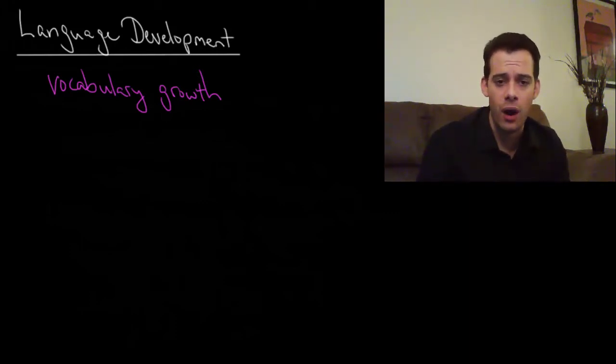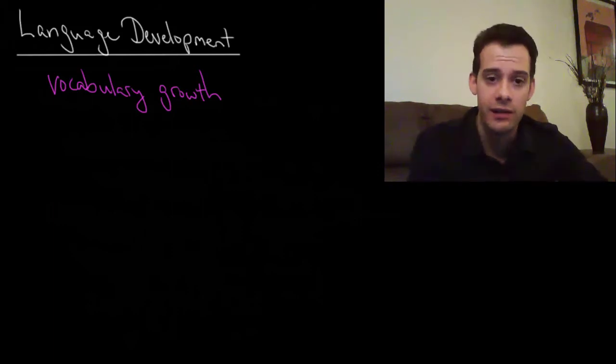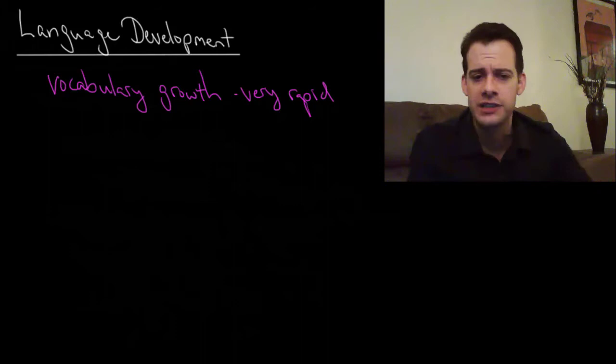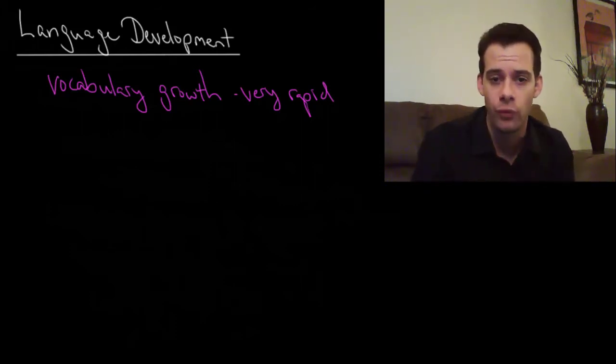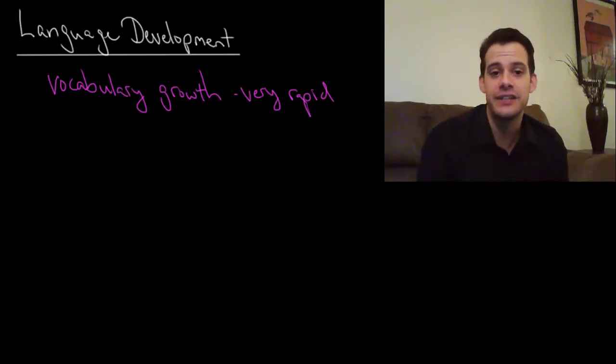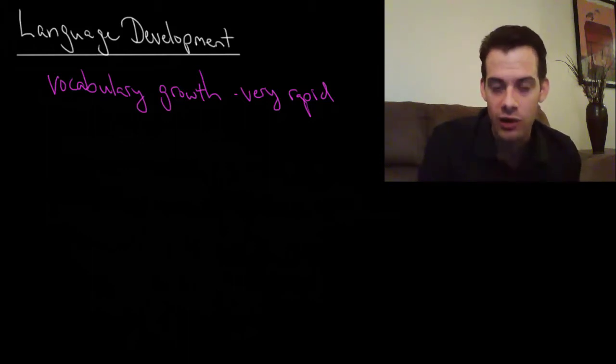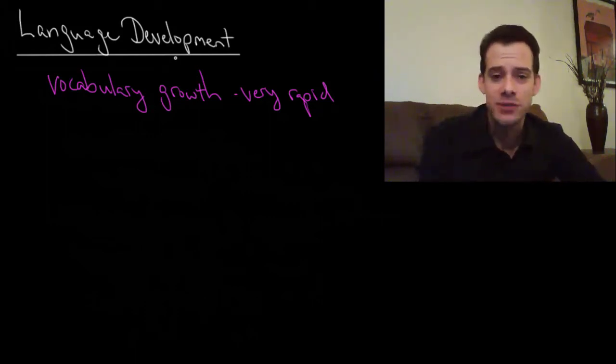Now one thing that happens is children acquire vocabulary very rapidly. Within their first few years children are able to learn thousands of words. This brings up some questions about the conditioning approach. If we try to explain this using behaviorism we see that it's far too rapid for each individual word to be reinforced or punished. It simply couldn't be the case that mom and dad sit down and reinforce every single correct word that the child uses. This would be too slow. Instead it seems that we are prepared to learn words very quickly without reinforcement.